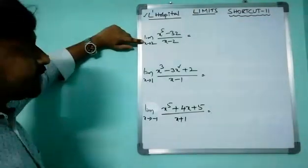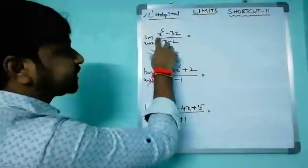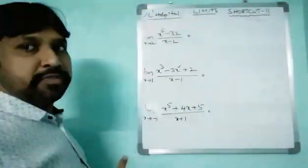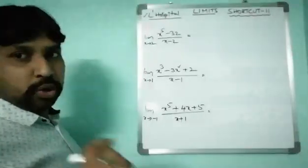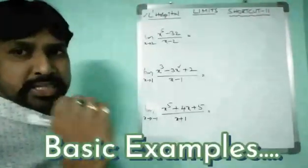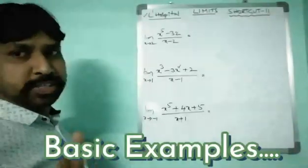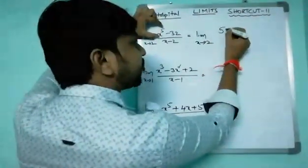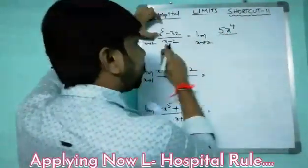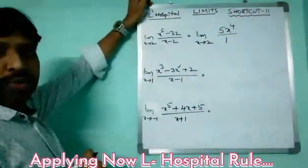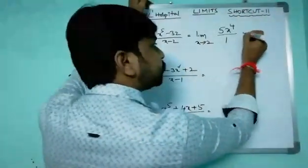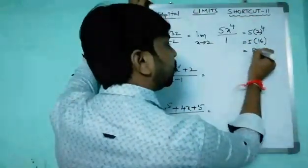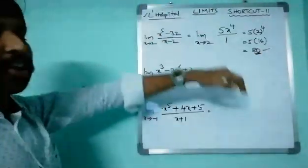First example: limit x tends to 2, (x⁵ - 32) / (x - 2). Substituting x = 2: 2⁵ - 32 = 0 and 2 - 2 = 0, so this is 0/0 form. Applying L'Hospital's rule: derivative of x⁵ is 5x⁴ and derivative of 32 is 0, over derivative of x which is 1. Substituting x = 2: 5 × 2⁴ = 5 × 16 = 80. The answer is 80.